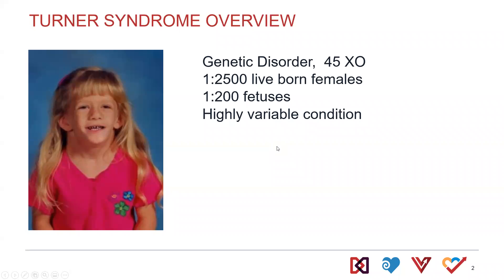Turner syndrome is a highly variable congenital condition with a typical karyotype of 45XO, although there is wide variation including a number of mosaic karyotypes that can all have similar function as the classic 45XO karyotype. Typical incidence is about 1 in 2,500 live-born females, and it is highly variable both based on mosaic karyotype, and even within a specific karyotype we see a huge variation in which clinical findings are seen, both in the heart and in other findings as well.